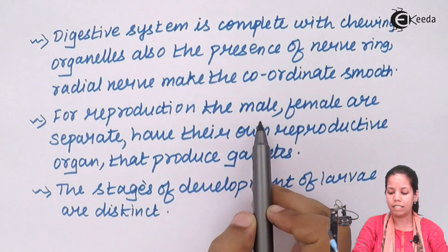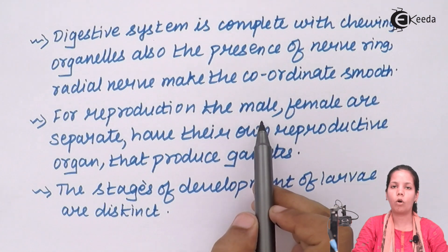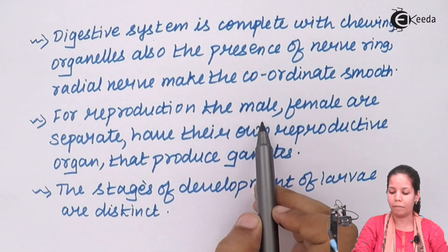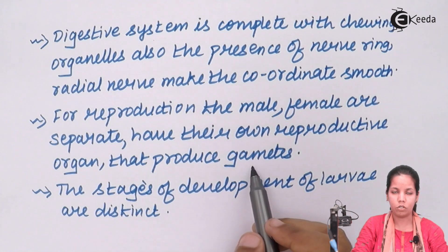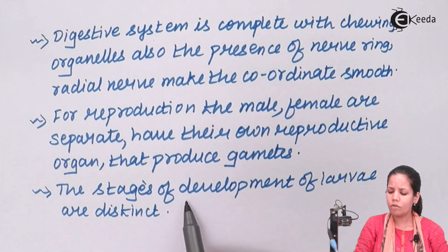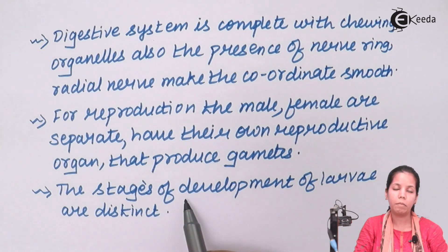For reproduction, the male and the female are separate. In simple language, male sex gametes are formed inside the male, and female sex organs produce the female sex gametes — each having their own reproductive organ that produces the gamete. So there will be a male and female gamete association. The stages of development of larvae, or the progeny, are very distinguished. Also, for locomotion or movement, they have feet which are termed as tube feet, or simply called suckers.